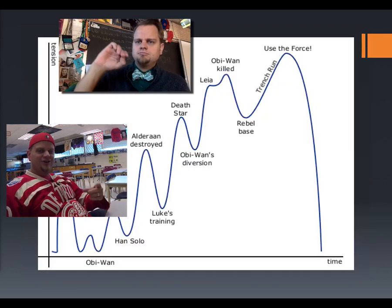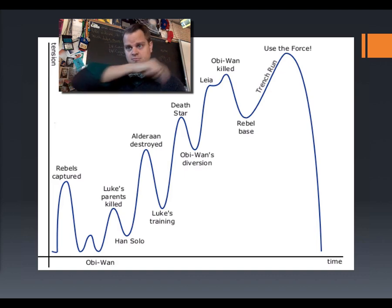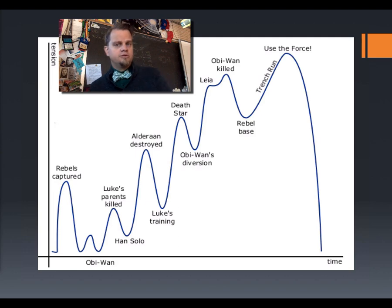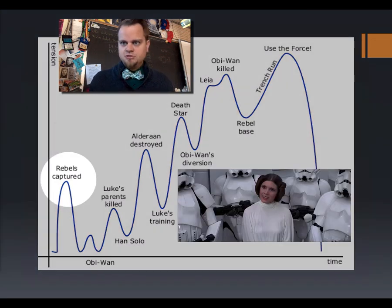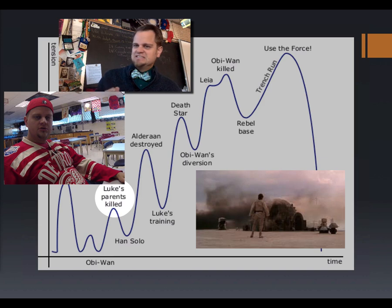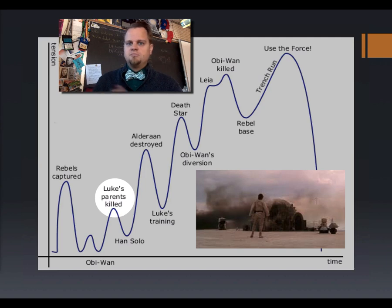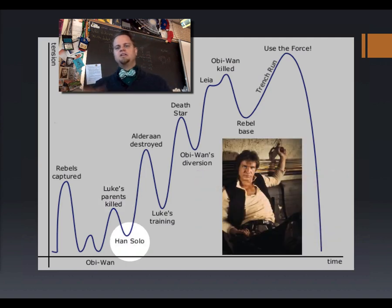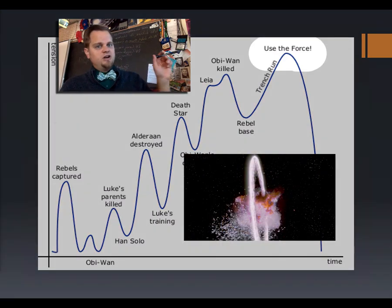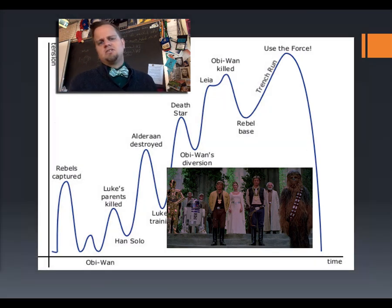Star Wars. See how the tension on the y-axis increases and decreases as time goes by on the x-axis. Time goes by with events in the story. You start off with the rebels being captured, but then it calms down — less tense. Then Luke's parents are killed. His parents getting killed is very intense. But then we switch to Han Solo, which is calmer. And then Luke uses the force to destroy the Death Star and save the galaxy. Then you have the special ceremony for heroism and the end credit music sequence, and the story is done.